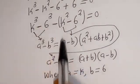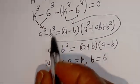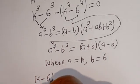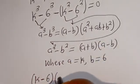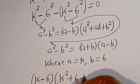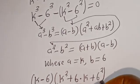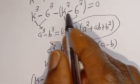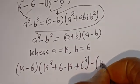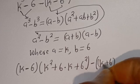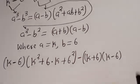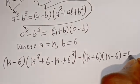Now let's substitute here. We have the bracket K minus 6, times the bracket K squared plus 6 multiplied by K plus 6 squared, then minus the bracket K plus 6, times K minus 6, is equal to 0.